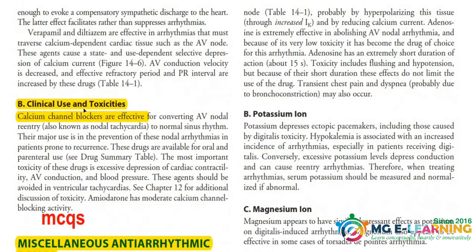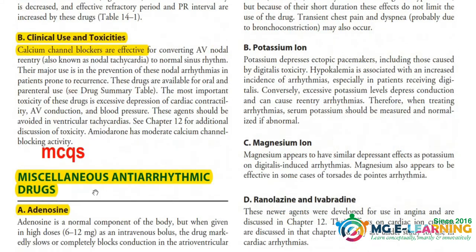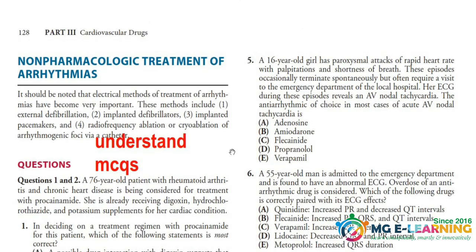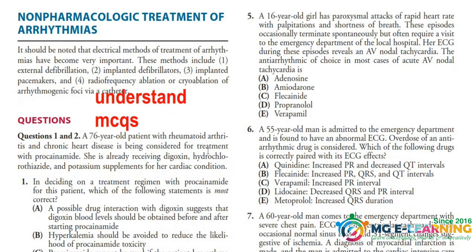Clinical uses and toxicities are important — you have to read out all of them. After that, the miscellaneous anti-arrhythmic drugs are important for MCQs; you have to know all their names and important points. Then in the MCQs portion, you have to understand the questions, statements, and all the options thoroughly.